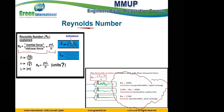Reynolds number — what is the definition? Inertia force divided by viscous force. Reynolds number is equal to inertia force divided by viscous force. Don't forget this, please, because we will see after two slides that one definition is very close to this one.